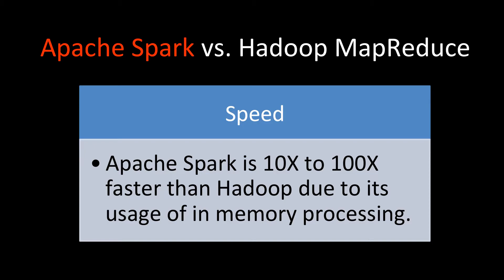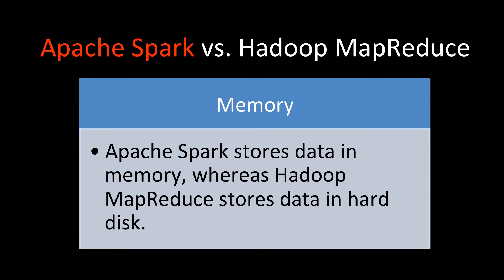Regarding memory, Apache Spark stores data in memory whereas Hadoop MapReduce stores data on the hard disk. There is more usage of memory in Apache Spark, whereas Hadoop directly works with whatever data is on the hard disk.